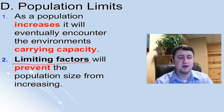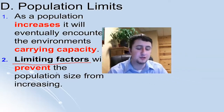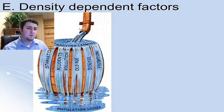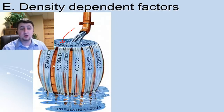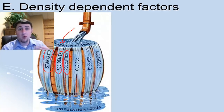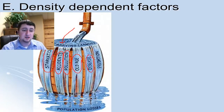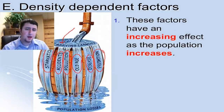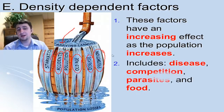There are limiting factors called density dependent factors that prevent population size from increasing further. Think of a bucket filling with water as a population increasing. Eventually the environment can no longer support enough food, so starvation kicks in, along with accidents, pollution, waste, old age, disease, and predation — all of these limit how big a population can get. As a population gets bigger, density dependent factors also increase, including disease, competition, parasites, and food.